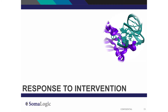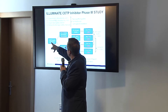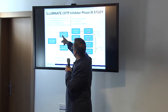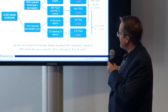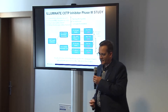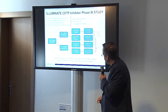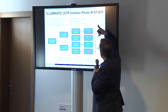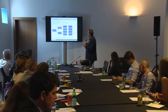What about measuring response to intervention? We were fortunate enough to access samples from the Illuminate study — Pfizer's CETP inhibitor study — in which 15,000 individuals were entered into a trial. Half received torcetrapib and a statin, the standard of care, versus individuals that received statin only. The trial was stopped after about 18 months because the number of cardiovascular events increased in the trial arm versus the control arm, and the number of all-cause deaths also increased in the trial arm. So what could we learn about the performance of this predictive algorithm in the context of a trial like this?